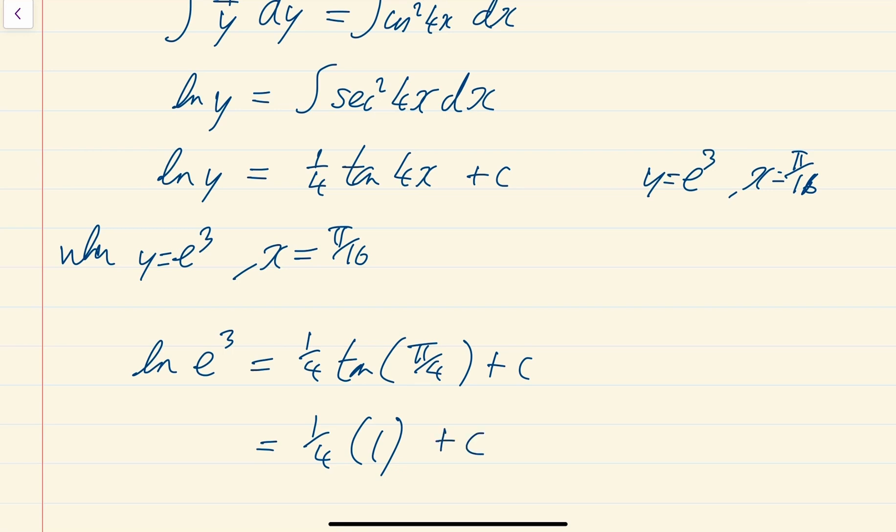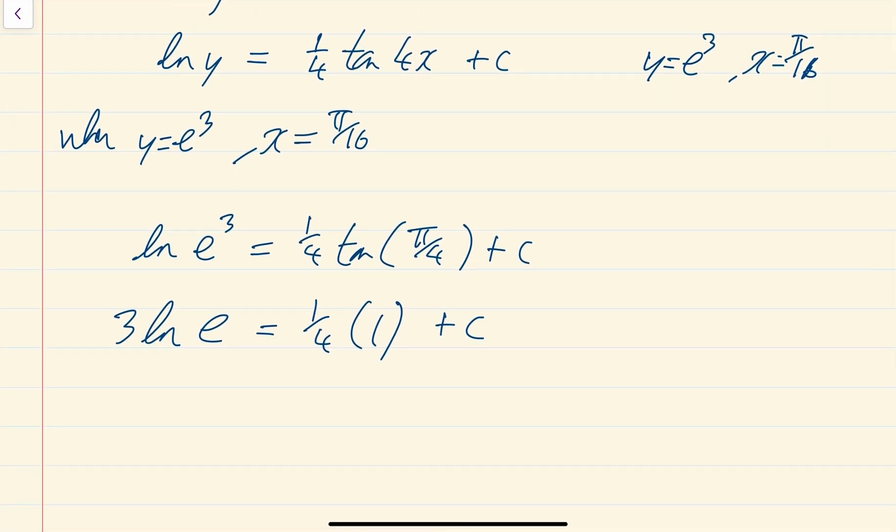And over here, that is the same. Remember your rules of logs. You can bring that 3 down, the power down. So it's 3 times ln of e, and ln of e is just 1. So that's just going to be 3 on this side equals 1/4 plus c, which means 2 and 3/4 equals your c.